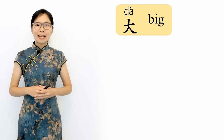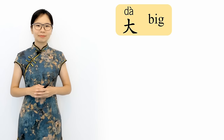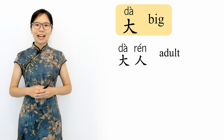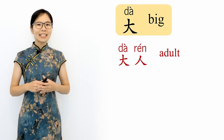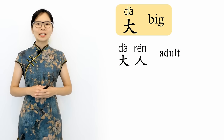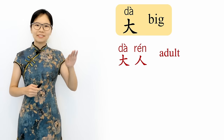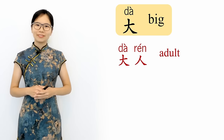Here are some example words that use the character 大. First is 大人. 大 means big and 人 means person, so 大人 means a big person — in other words, an adult. 大人, adult.